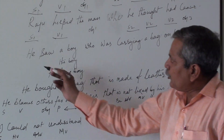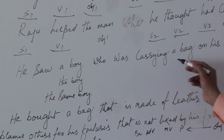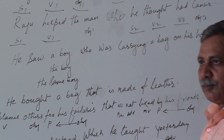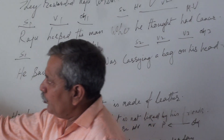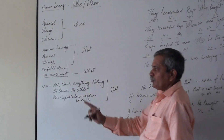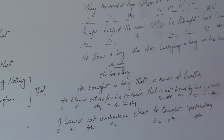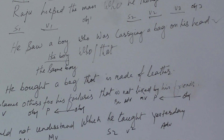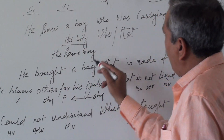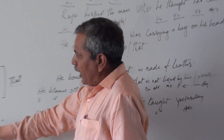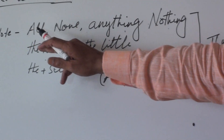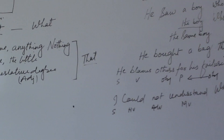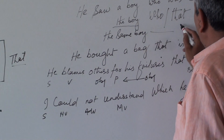He saw a boy who was carrying a bag on his head — is that correct? Now if I say 'the boy' — the noun is definite — you can use either who or that. Now the next: 'He saw the same boy.' What did I tell you? If the defining clause contains the same, you must use only 'that'. So in this case we are going to have only 'that'.